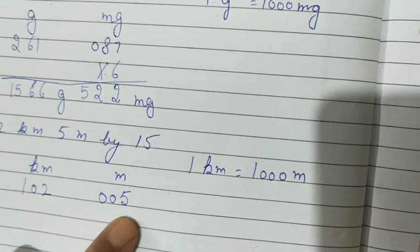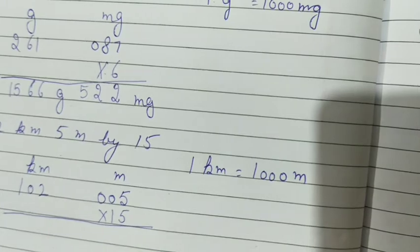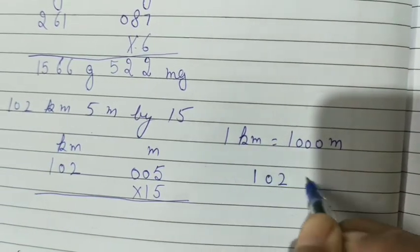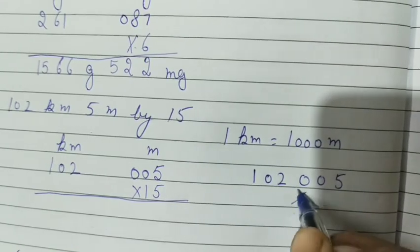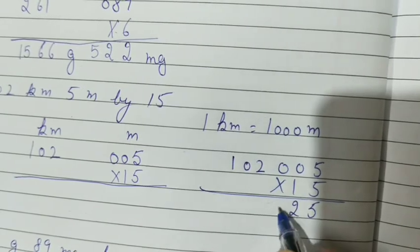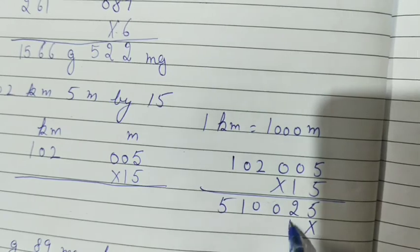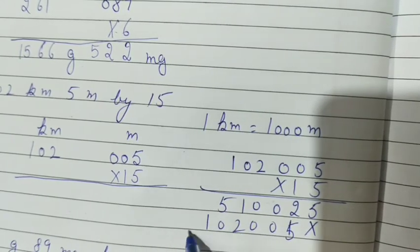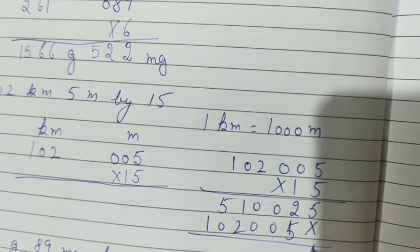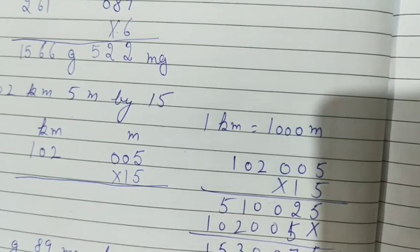Now it is the correct question. 102 kilometer, 0, 0, 5 meter, now multiply by 15. 1, 0, 2, 0, 0, 5 multiply by 15. 25, 0, 10, 5. Then 5, 0, 0, 2, 0, 1. It will become 5, 7, 0, 0, 3, 5, 1.